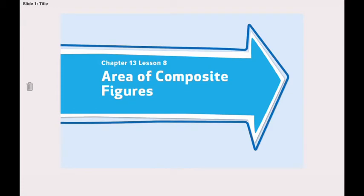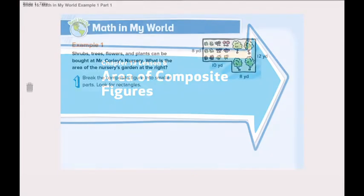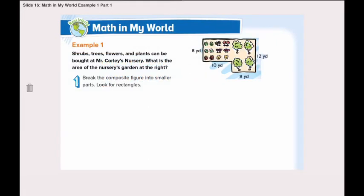To find the area of a composite figure, we will need to decompose the figure into smaller parts. We can decompose it into different rectangles and then start calculating the area. Open page 797 and let's go through example number one together.